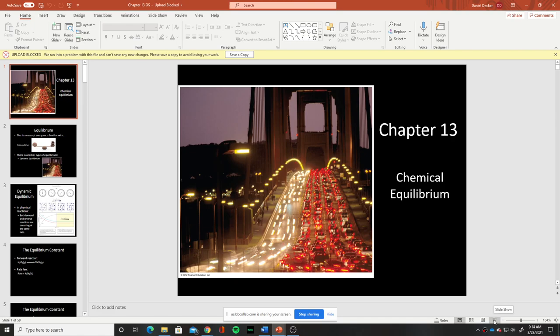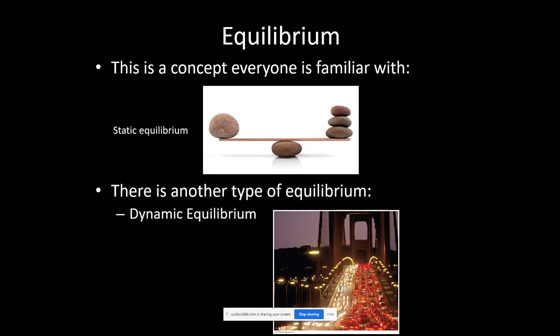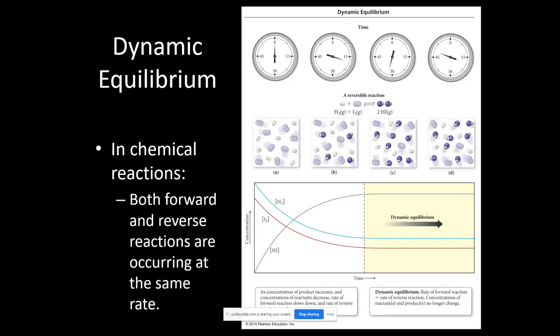We'll pick up here at Chapter 13 and go through the slides to the end. We're starting with an introduction to chemical equilibria. You need to know the difference between static and dynamic equilibrium — that could be a multiple choice or true/false question. Static equilibrium means forces are balanced but nothing is moving; dynamic equilibrium means there's no overall change but things are still happening. This leads into how dynamic equilibria apply to chemical reactions, relating to what we covered in the last chapter on kinetics.